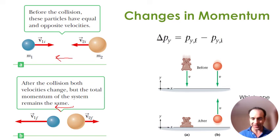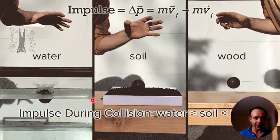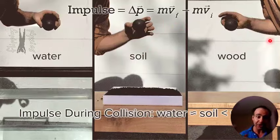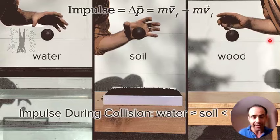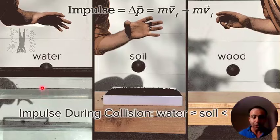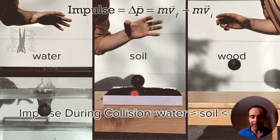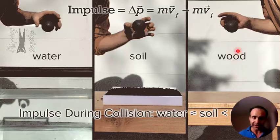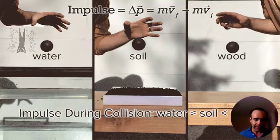Just to show an example of how things look in different substances — in this case we have the same exact mass but we are changing the type of surface the bouncy ball is striking. We're going to see how water changes the momentum of this object, how soft soil changes the momentum, and how hard wood changes the momentum.